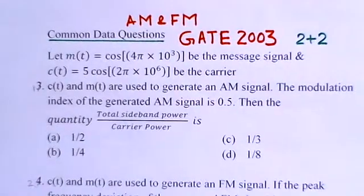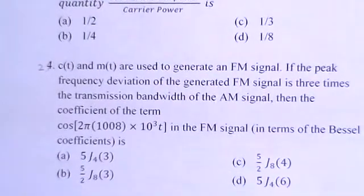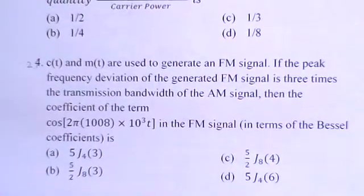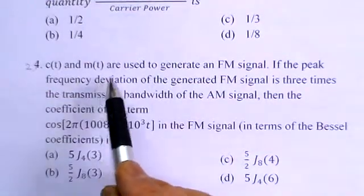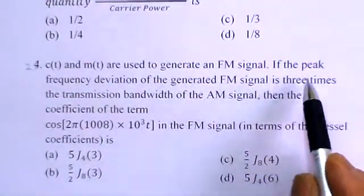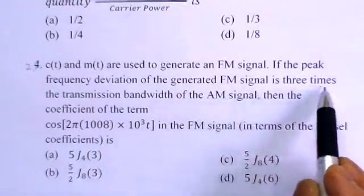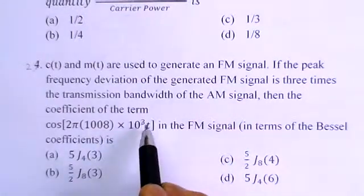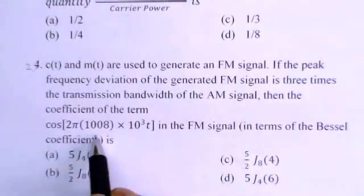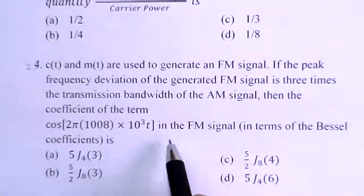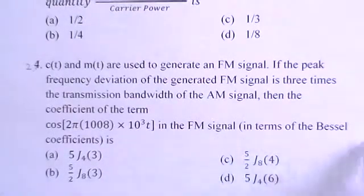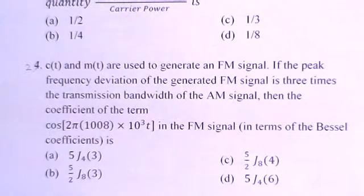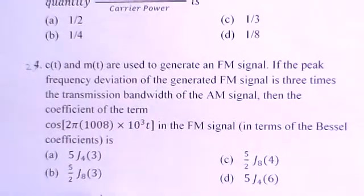In the second part of the problem, c(t) and m(t) are used to generate an FM signal. If the peak frequency deviation of the generated FM signal is 3 times the transmission bandwidth of the AM signal, then the coefficient of the term cos(2π × 10³t) in the FM signal in terms of the Bessel coefficient is to be found. There are four options given.